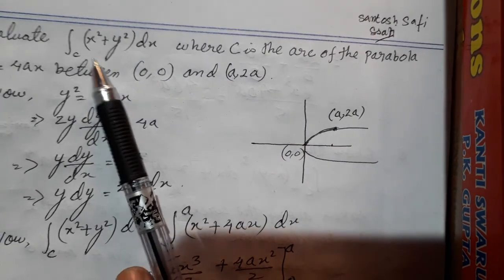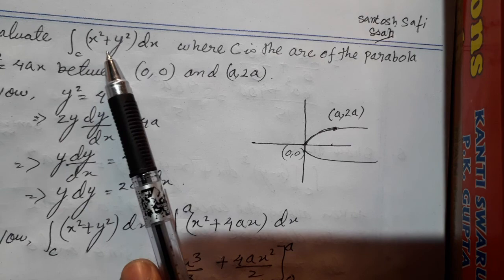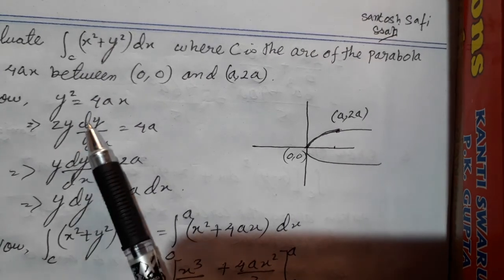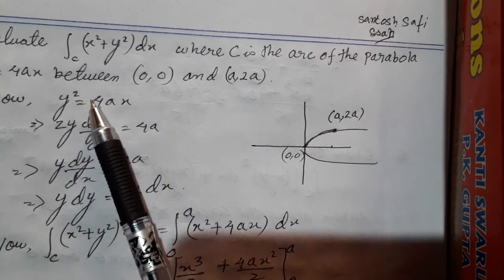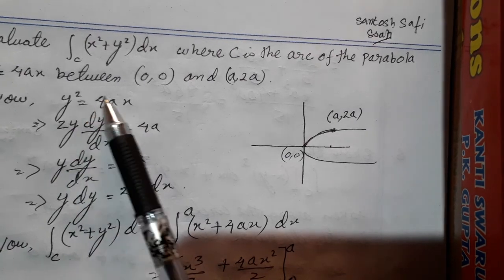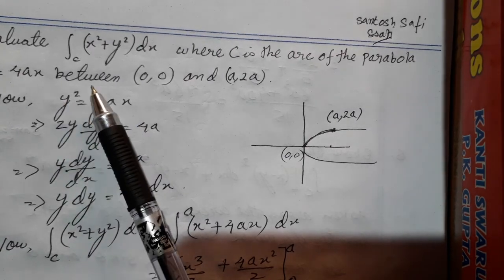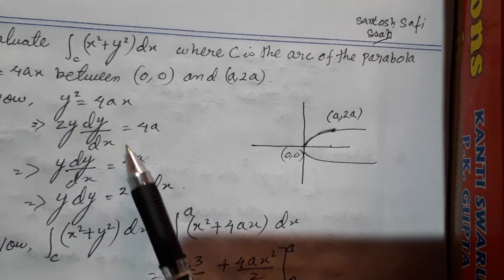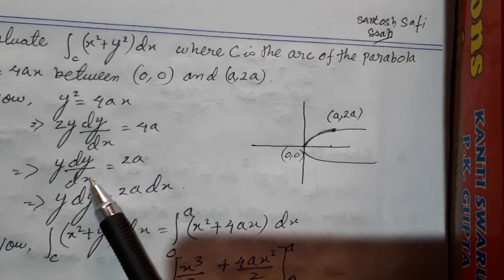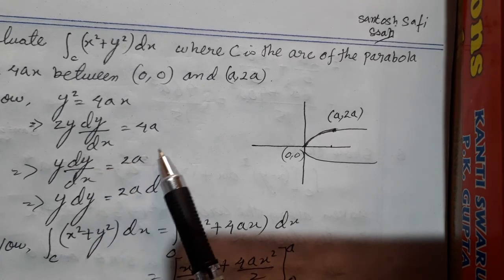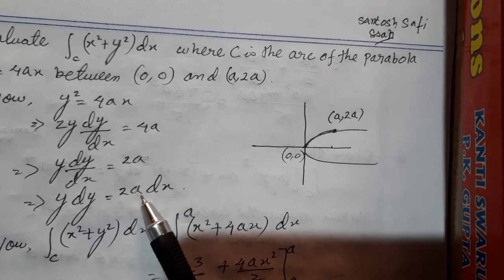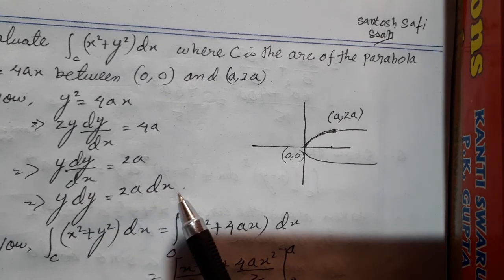So we'll take the parabola y squared equal to 4ax and differentiate this equation with respect to x. So we get 2y dy/dx equal to 4a. So y dy/dx equals 2a, which means y dy is equal to 2a dx.